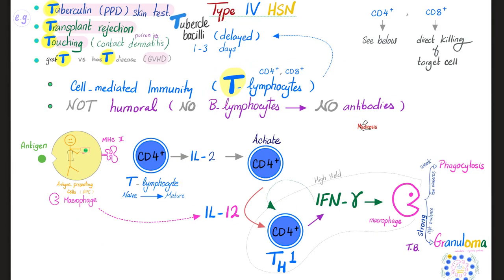Clinical examples of type 4, T lymphocytes: the tuberculin skin test for tuberculosis and granuloma. It's for transplant rejection, such as acute rejection and chronic rejection, but not hyperacute organ transplant rejection. Contact dermatitis — the story of poison ivy, wearing a nickel watch and developing a rash shaped exactly like a watch, trying new makeup and three days later developing a reaction exactly where you applied it. This is also the story of graft versus host disease.